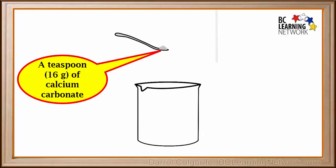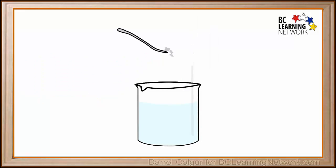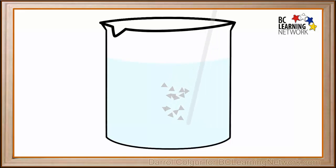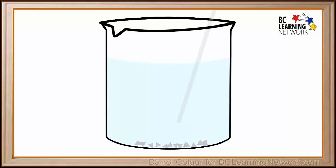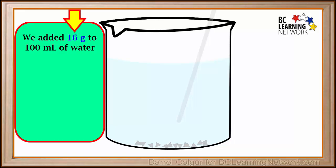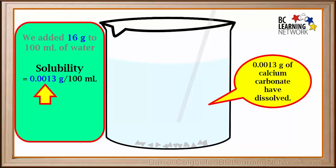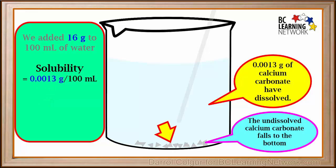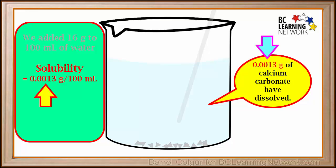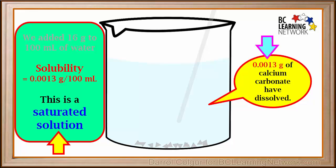Here's a teaspoon, or 16 grams, of calcium carbonate in a beaker. We'll add 100 milliliters of water to the beaker. Watch what happens when we add calcium carbonate and stir. We see that it sinks to the bottom without dissolving. The 0.0013 grams that does dissolve is so small that we don't even notice it. We've added 16 grams of calcium carbonate to 100 milliliters of water, but only 0.0013 grams dissolve in this volume and the rest falls to the bottom. Because all of the solute that can dissolve has dissolved, this is called a saturated solution.